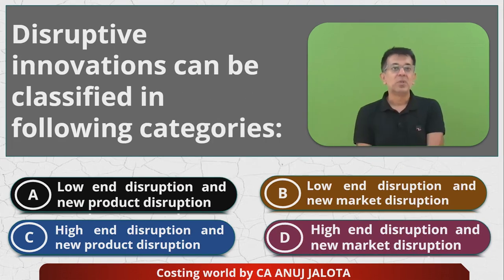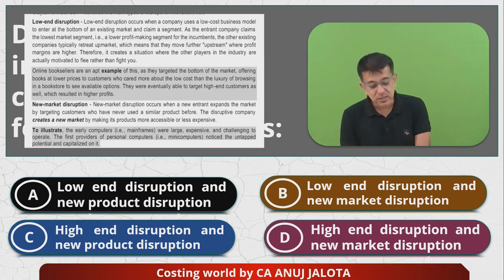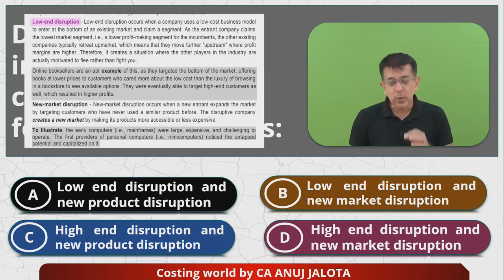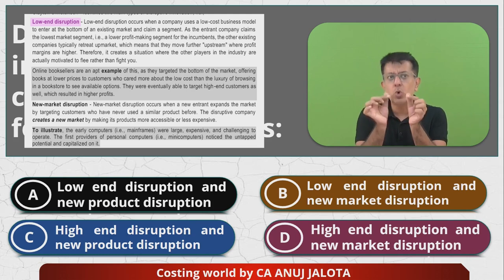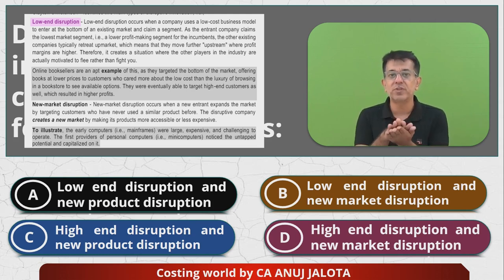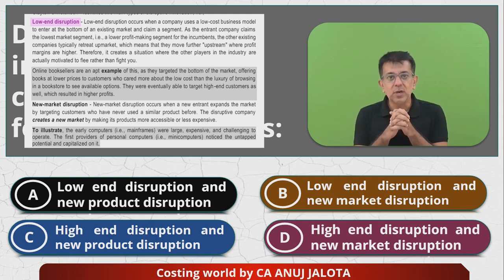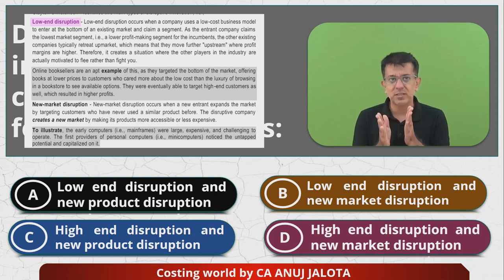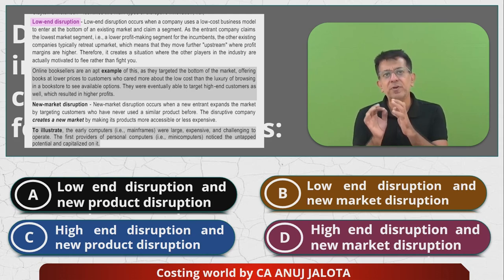Now, your module says that disruptions are of two types. You have low-end disruptions. Low-end disruptions happen when a company uses a low-cost business model to enter at the bottom of the existing market. There is an existing market and you try to enter it with your product at the least selling price, claiming the lowest market segment — a lower profit-making segment.